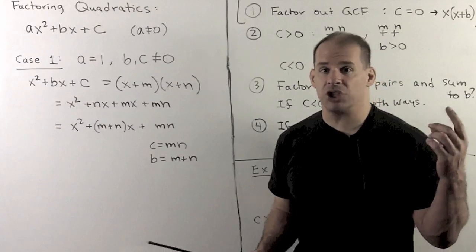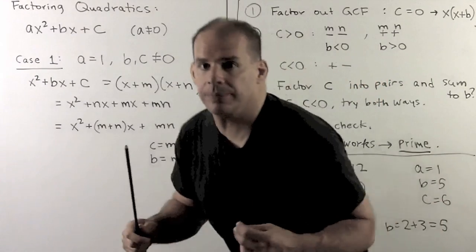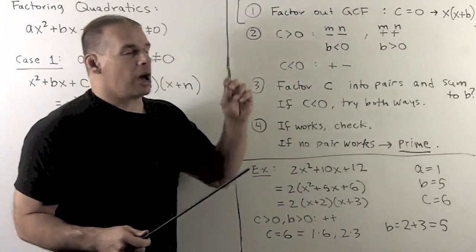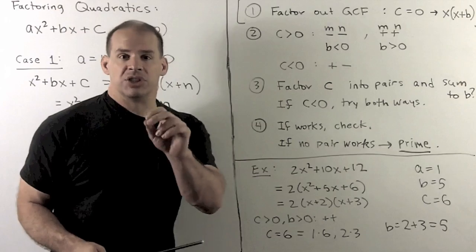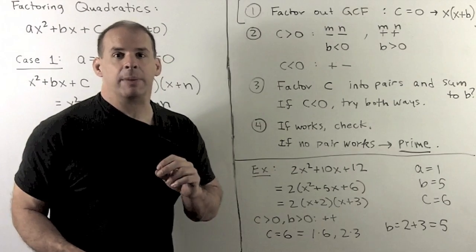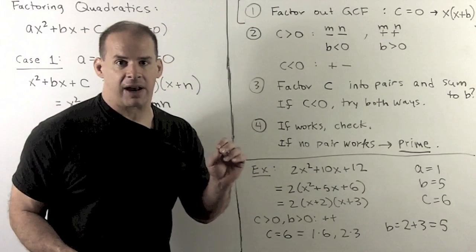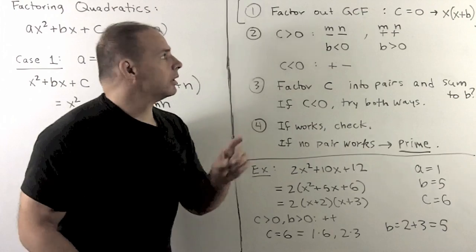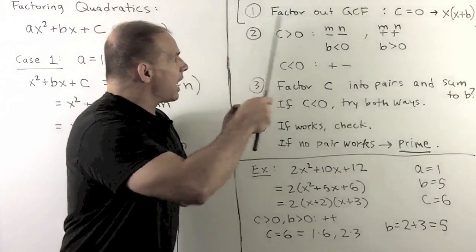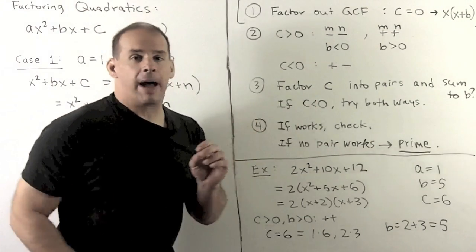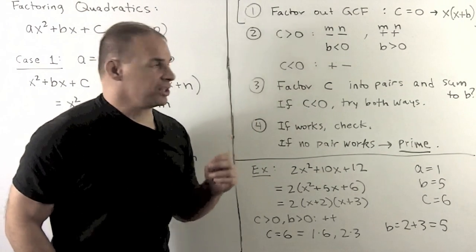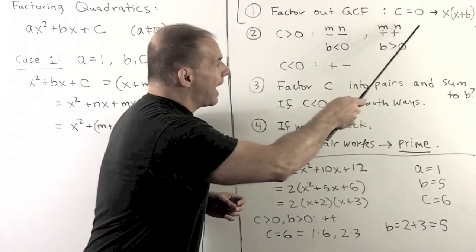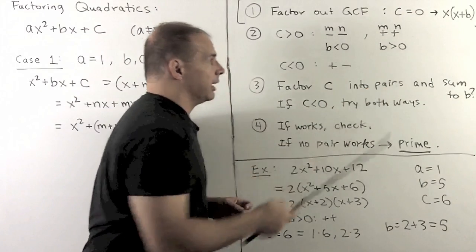When we consider signs, we have a checklist. Step 1 — this is just to keep us in the habit — we always look for a greatest common factor. Now, because a is equal to 1, there's not going to be anything to pull out, except in the special case where c is 0. There, what would happen is we have x times x plus b.